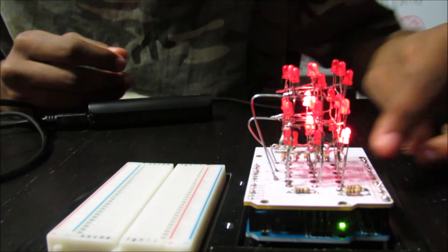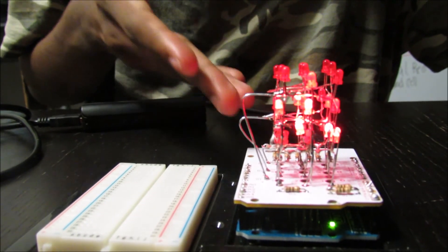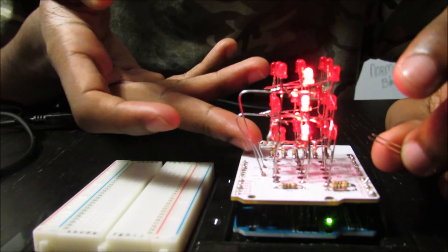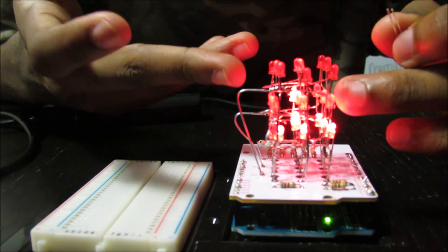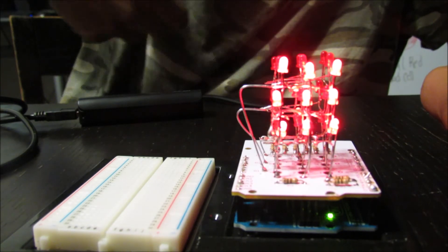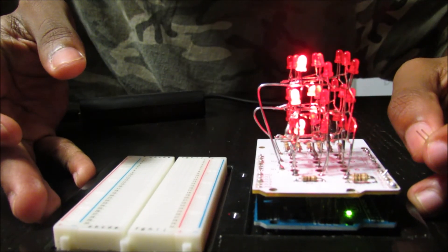So, then we had to program it on Arduino to make it go in these different directions. Some of them don't work because we had some problems with the welding tool. So, that's why some of it doesn't go on. This is the 3D LED cube kit.